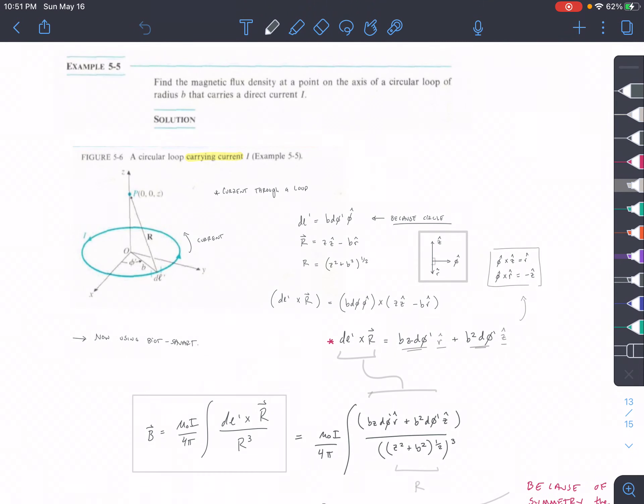All right, so this is example 5-5. Be very careful with these problems because I know that this looks very similar to what we did with a charged ring. So make sure you read your problem carefully and don't just go off of the picture.